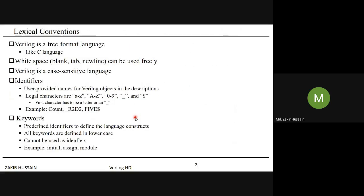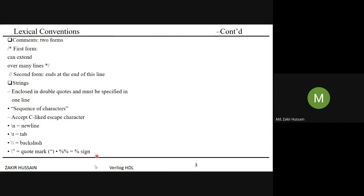Few example keywords are: initial, assign, module — we will see these while writing programs. For comments: multiple-line comments start with /* and end with */. Single-line comments use double forward slash //.